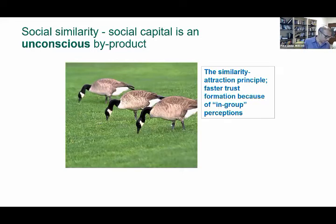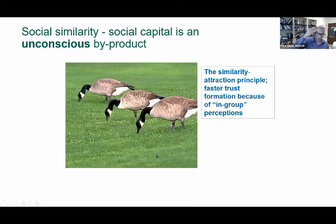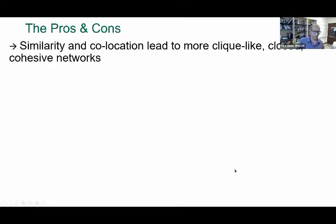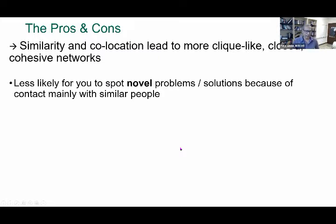There are many dimensions of similarity — gender, region of India you come from, occupation. Our brains are wired that way; we tend to form more trustworthy connections because we feel people who are like us are likely to be more trustworthy. But if you want to be an entrepreneur with a diverse network, relying only on these passive mechanisms is not a good idea — you'll end up with cohesive clique-like networks and less likely to spot novel problems and solutions.